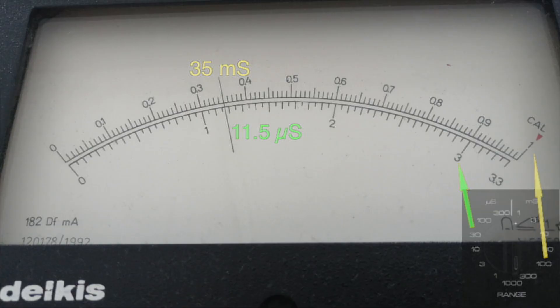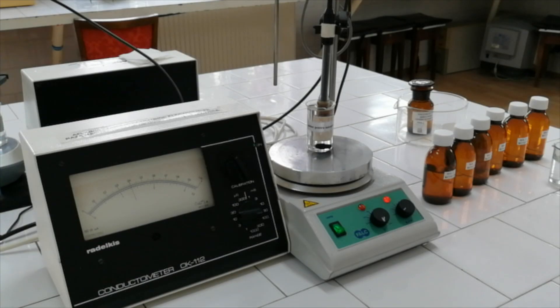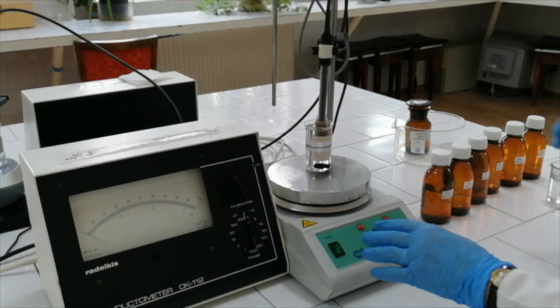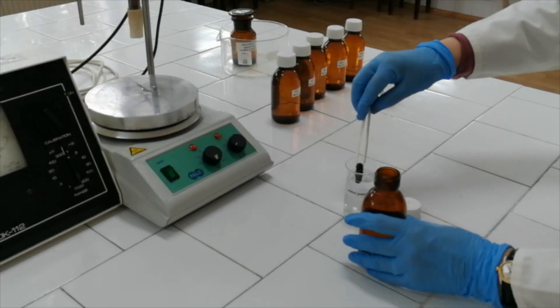Read the electrical conductance of distilled water 3 times and record the values in the table, expressing them in mS. Repeat the steps and measure the conductance of tap water, the 5 solutions of potassium chloride of known concentration, and one solution of potassium chloride of unknown concentration. After each measurement, don't discard the potassium chloride solutions — pour them back in their containers.